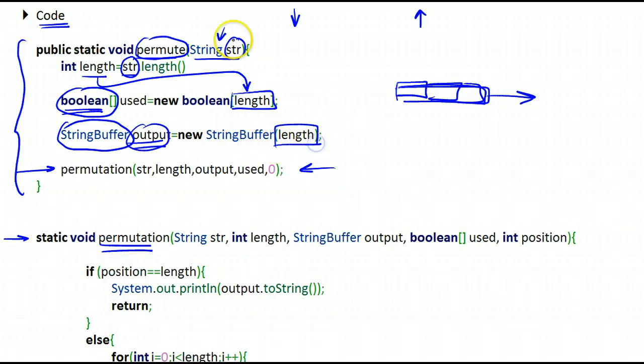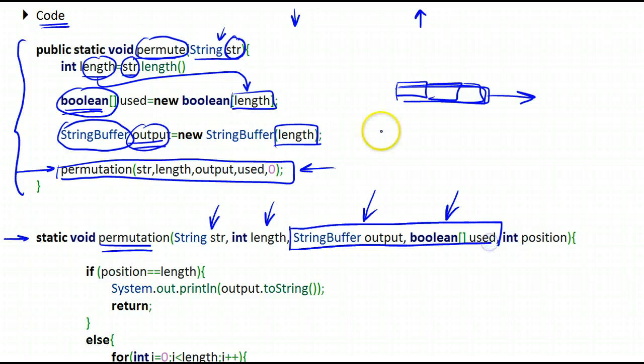We are making it as large as the string is. And then finally, we call our permutation method. Permutation is a recursive method. It takes the string itself, it takes the length that we've computed here, we only computed once, and it also takes the two data structures that we've initialized in the wrapper method: the output string buffer and the Boolean array used. And finally, it takes an index called position, which will allow us to determine where we are going to place our next character in the string buffer. So the first call to permutation will contain the position zero, because we will be placing the first character in the first position of the string buffer. The string buffer is still empty.